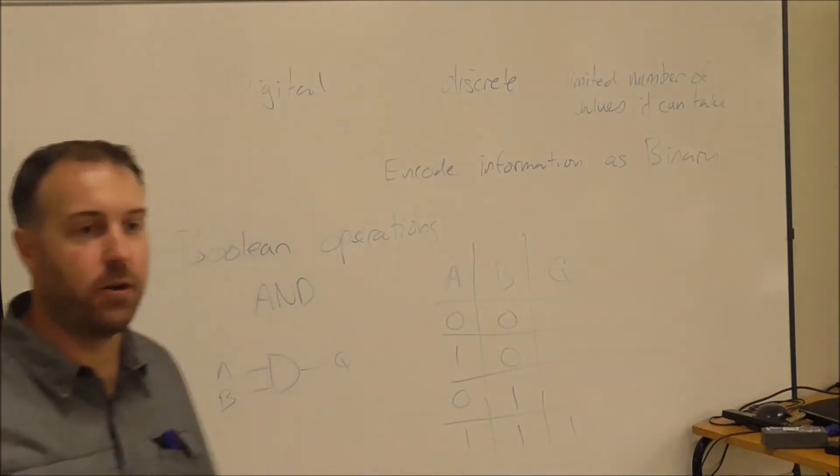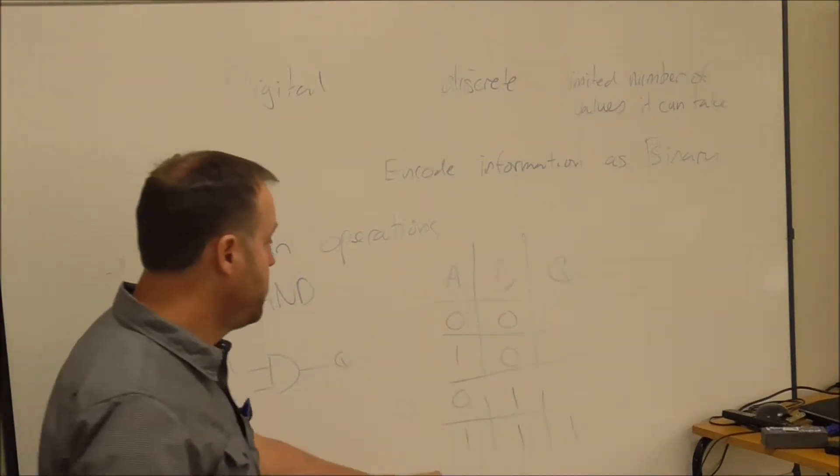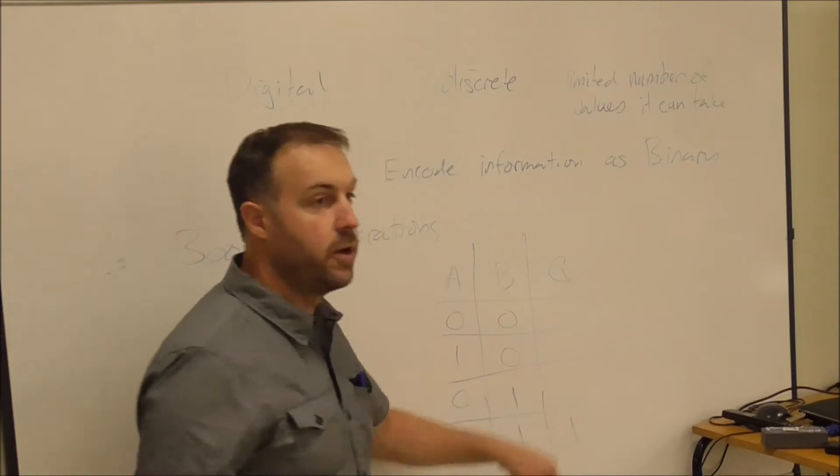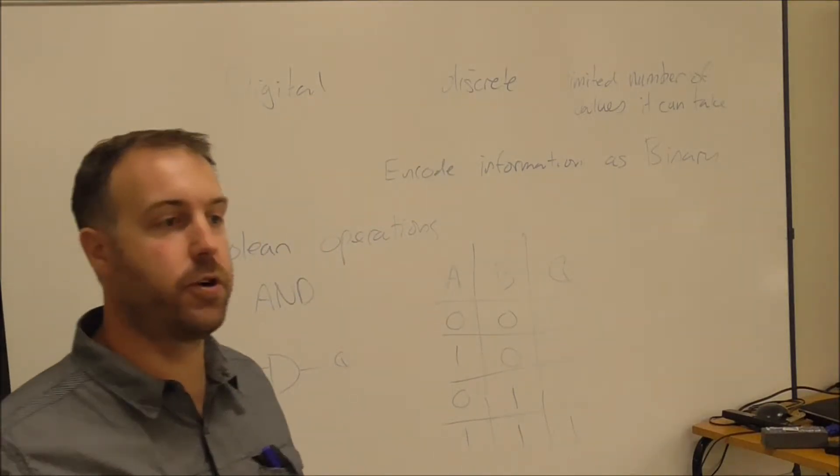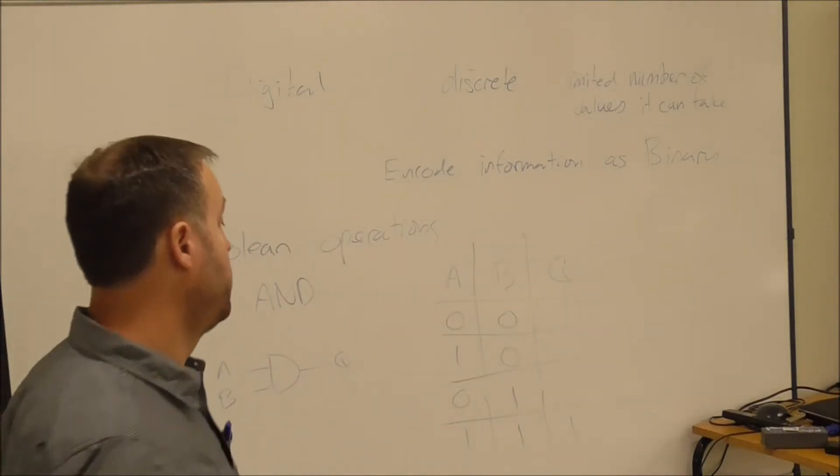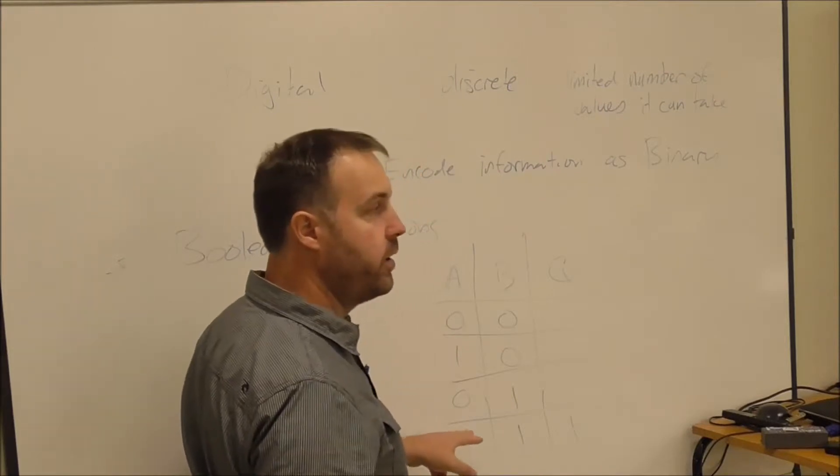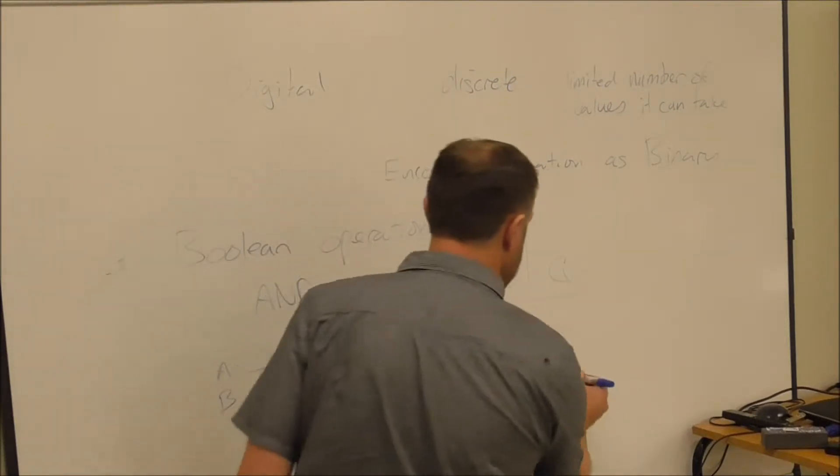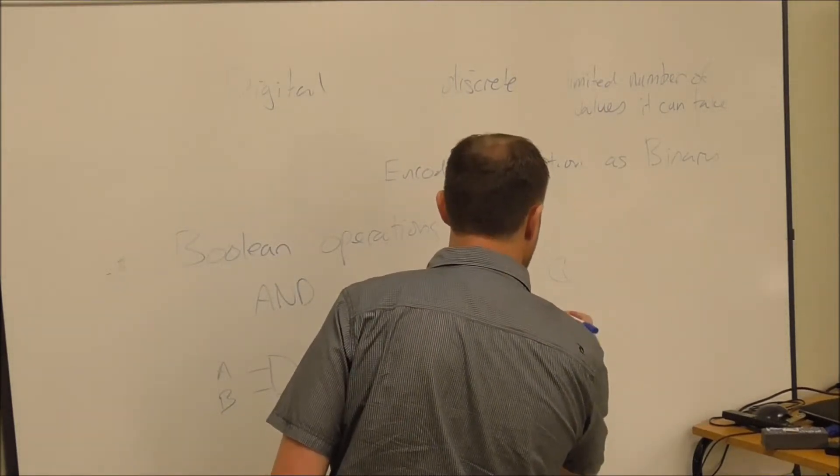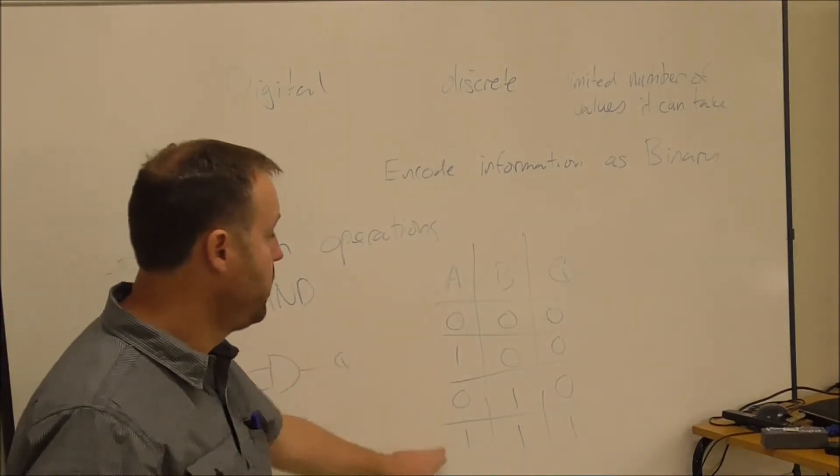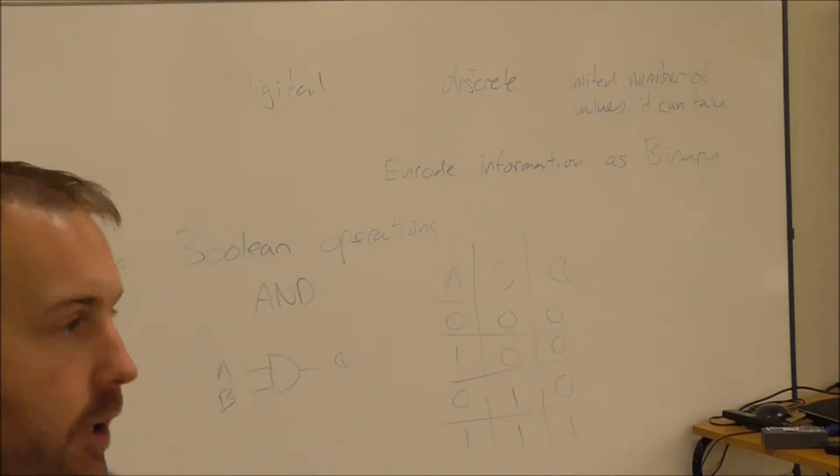But that is the only time that it'll be one. Otherwise, if A and B are both true, it is true, otherwise it is false. So if A and B are both one, it's one, otherwise it is zero. The truth table for an AND gate is as such.